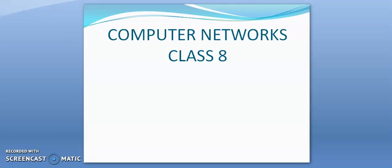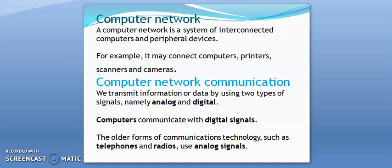Hello class, today we will study the chapter on computer networks. A computer network is a system of interconnected computers and peripheral devices. For example, it may connect computers, printers, scanners, and cameras.